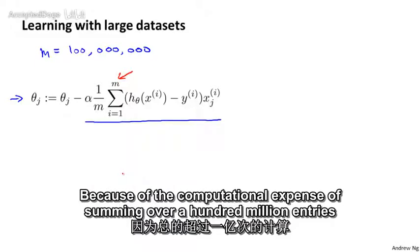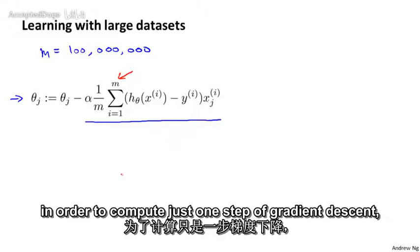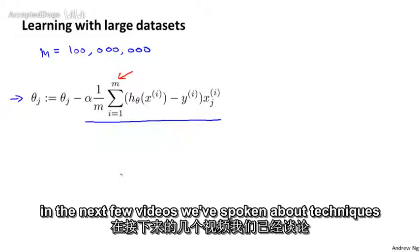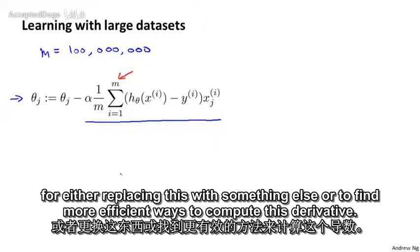Because of the computational expense of summing over a hundred million entries in order to compute just one step of gradient descent, in the next few videos, we'll talk about techniques for either replacing this algorithm with something else or to find more efficient ways to compute this derivative.